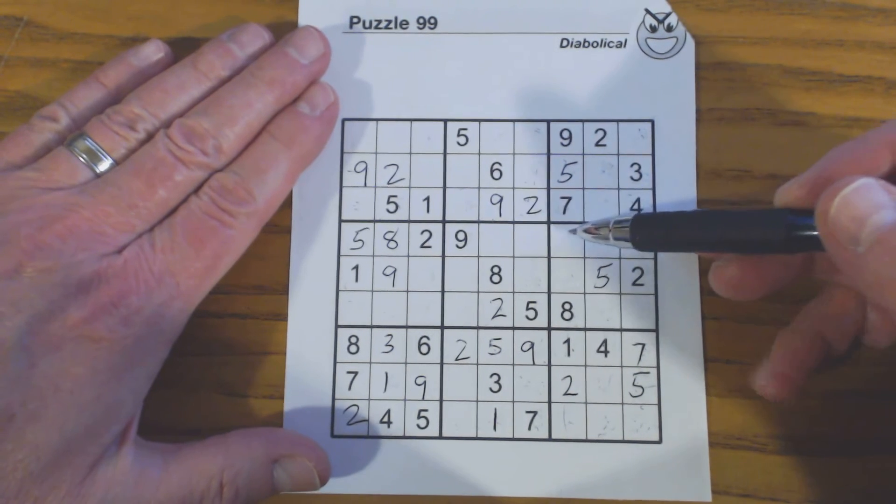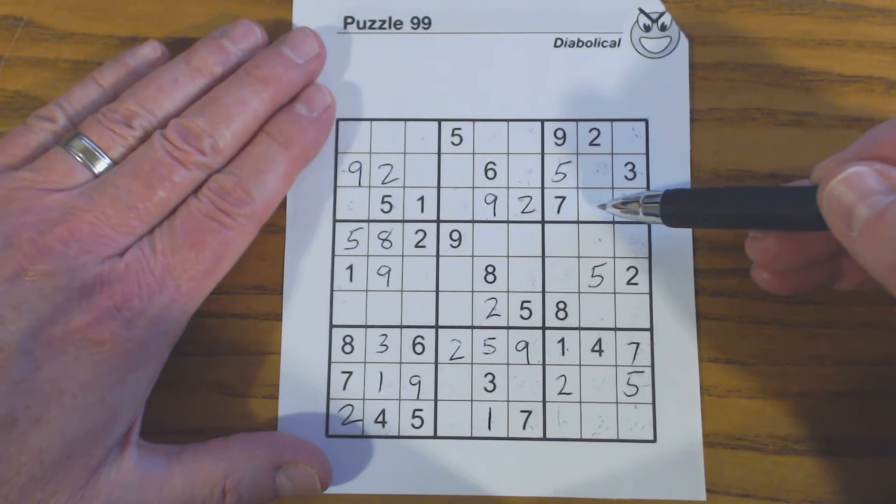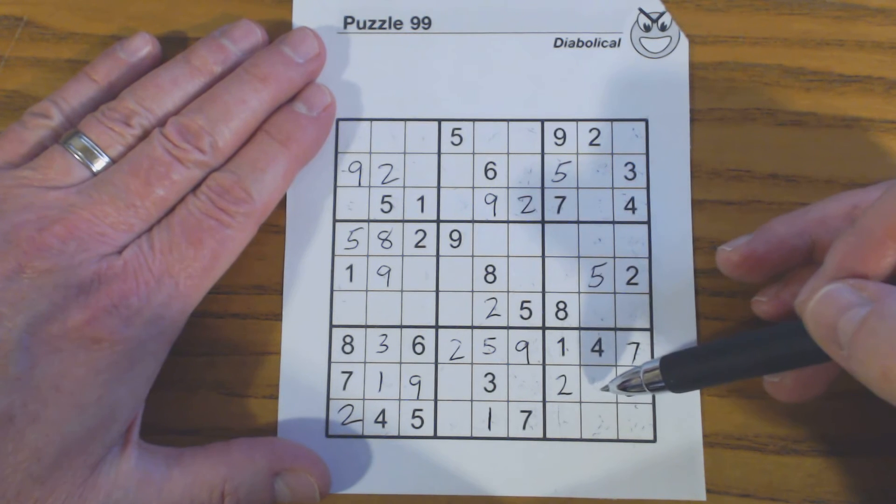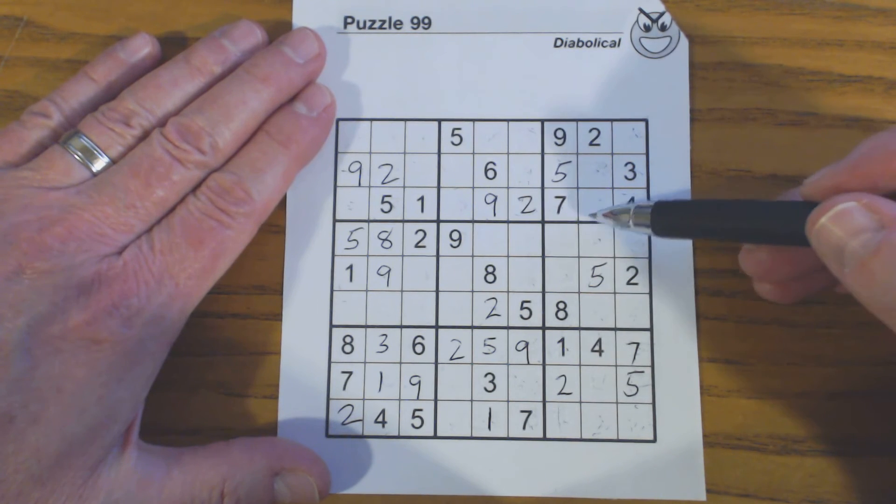Now earlier I noticed that there's a 6 or an 8 here and a 6 or an 8 here. So those are twins. Even though we don't know where the 6 and where the 8 go,